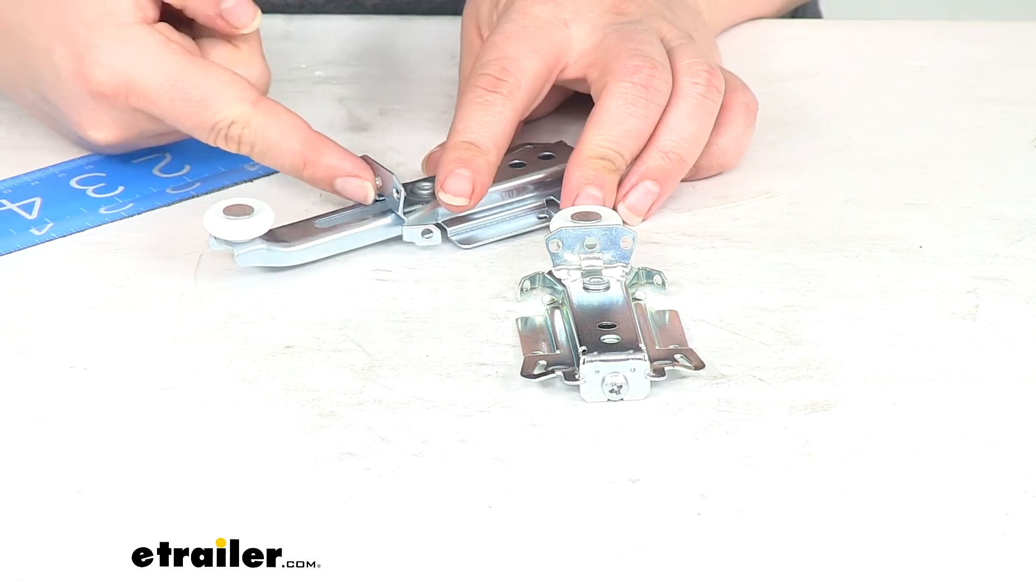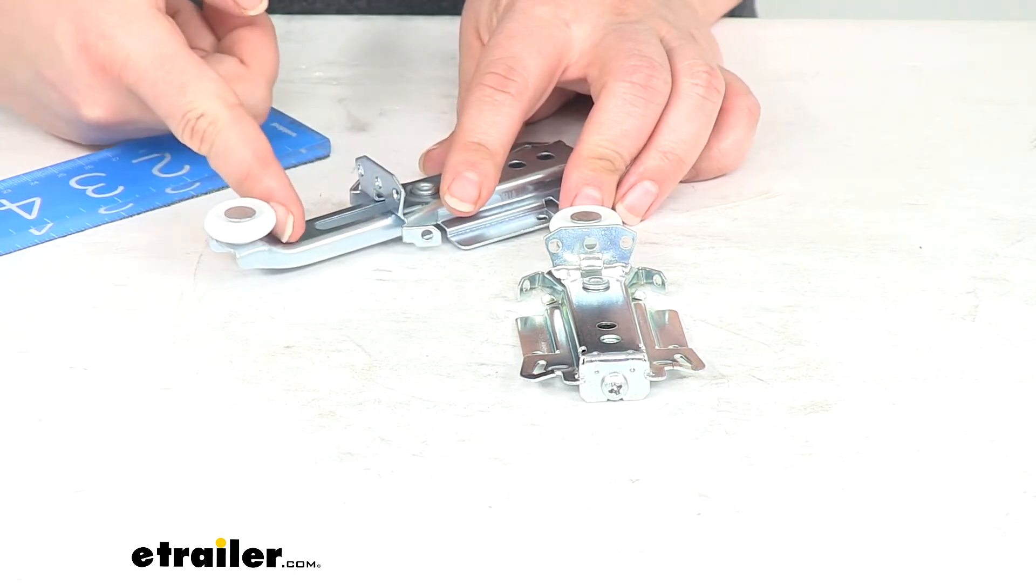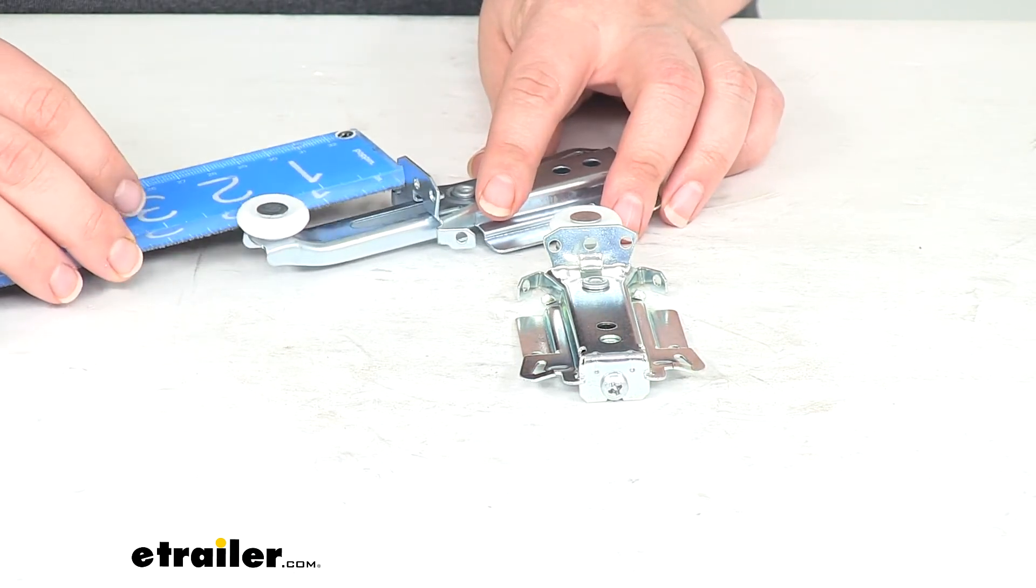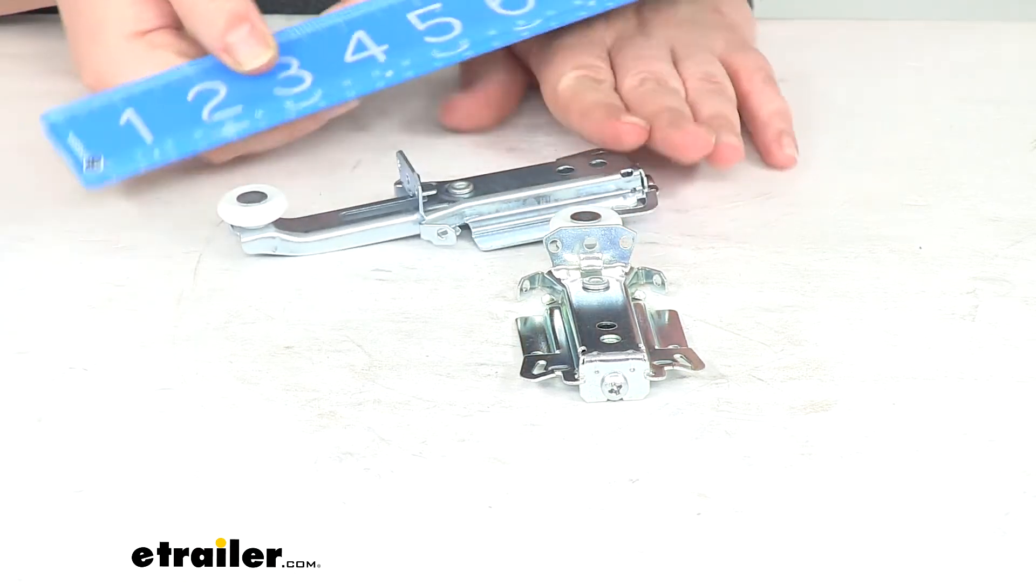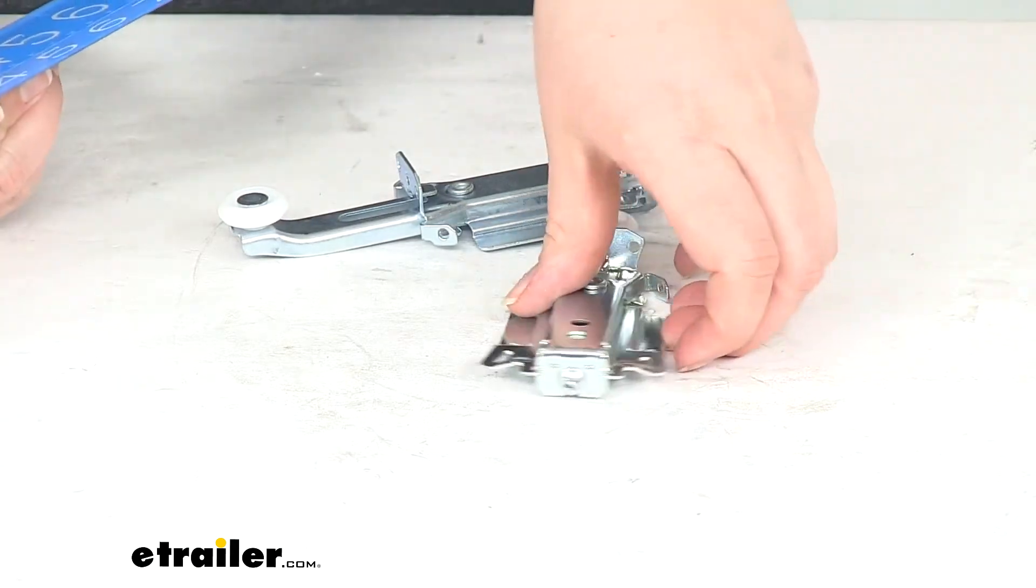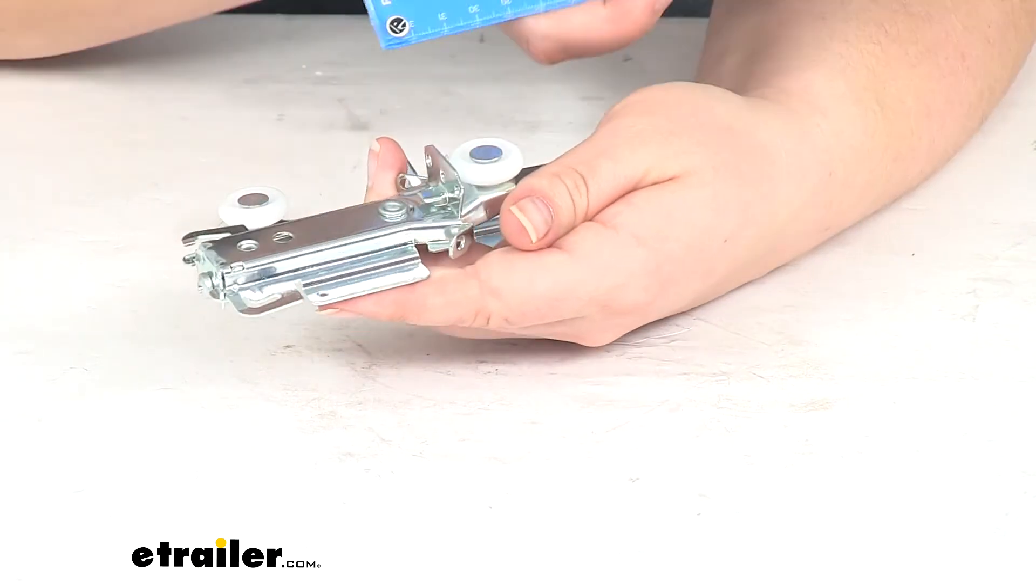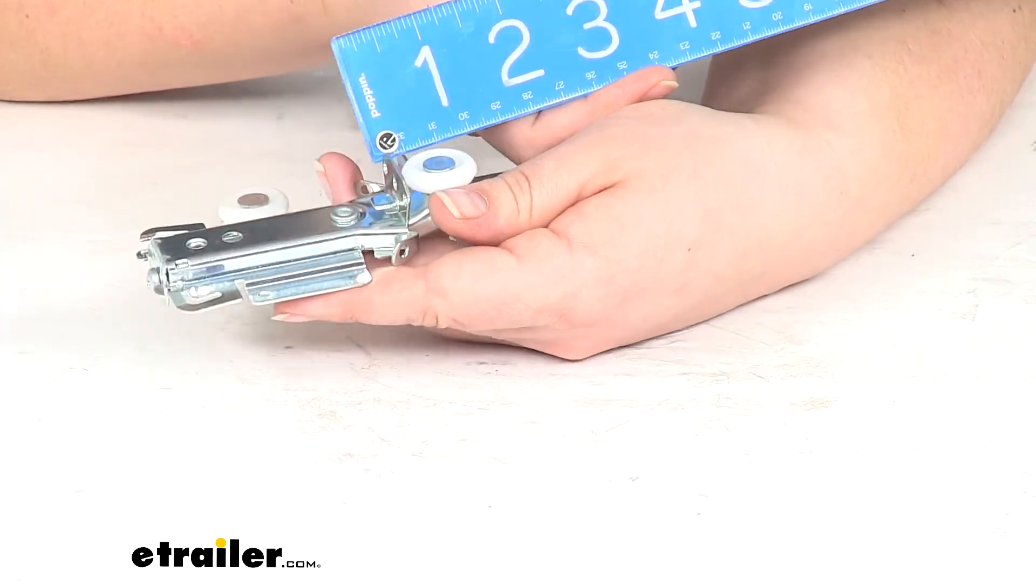So this one going from the top of this bracket to the bottom of the wheel there, it's going to give us a universal mounting point. It's about an inch and a half when it's all the way out. And then when it's run all the way in, we have about an eighth of an inch of space in between those two.